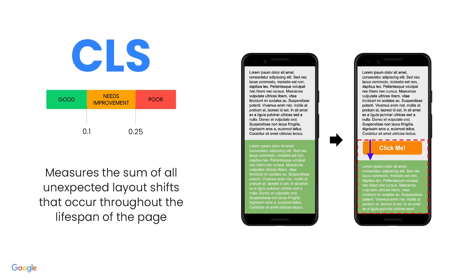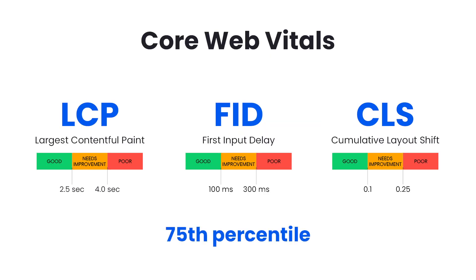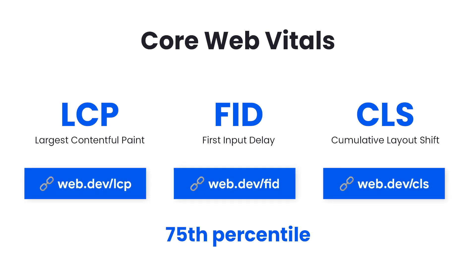Finally, Cumulative Layout Shift. It's annoying when you're loading up a web page and you start reading something and then suddenly that thing moves to make room for an image that's just loaded, or even worse, a video ad. CLS measures how much elements move as the page displays. It multiplies the size of each element that moves by how far it moves, and adds that up. Below 0.1 is considered good. To meet a Core Web Vitals goal, you want to pass it for at least 75% of your page loads. For more details, visit web.dev — there's a link for each on your screen.